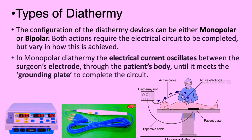The types of diathermy: the configuration of diathermy devices can either be monopolar or bipolar. Both require an electrical circuit to be completed but vary in how this is achieved. In monopolar diathermy, the electrical current oscillates between the surgeon's electrode through the patient's body until it meets the ground plate to complete the circuit. This is the ESU — the electrosurgical generator.